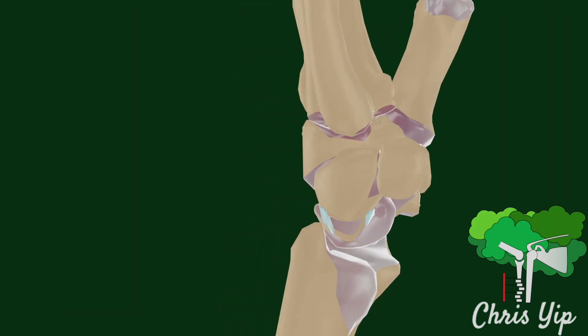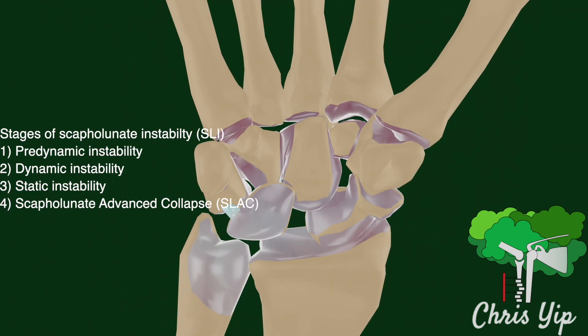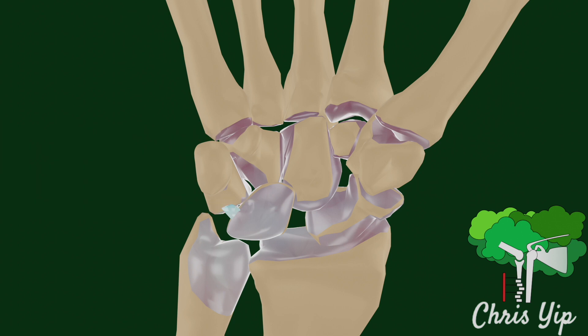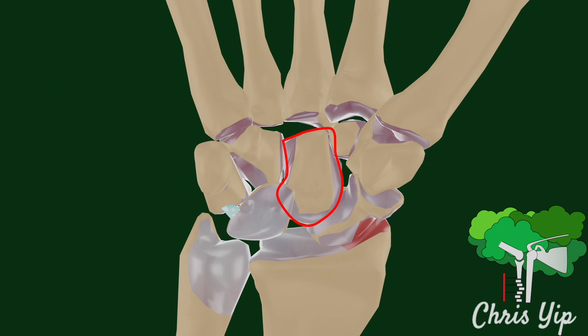As the instability progresses, it can lead to a condition called scapholunate advanced collapse. There will be an increased articulation between the scaphoid and the radiostyloid, which can lead to radioscaphoid arthritis. Other signs include the proximal migration of the capitate and other features of radiocarpal arthritis.